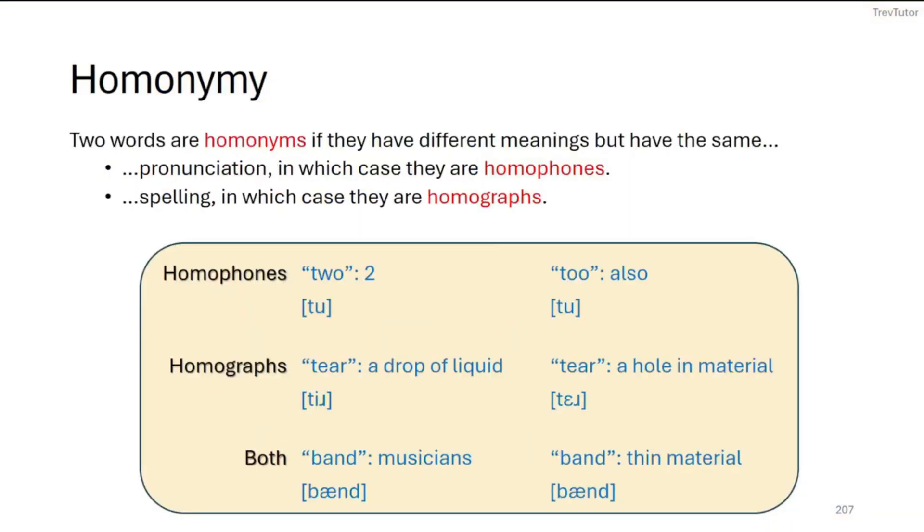Now let's talk about some word relations. We say that two words are homonyms if they have different meanings but either the same pronunciation or same spelling. If it's the same pronunciation, then we call them homophones—homo just meaning same, and phones meaning sound. And then homographs—homo again meaning same, and graphs just meaning the way that we write things down. So you can think of it as writing. Same sound versus same writing.